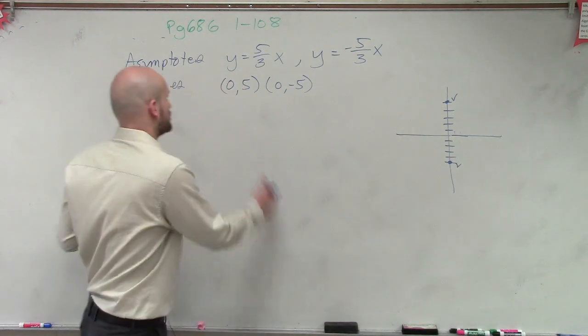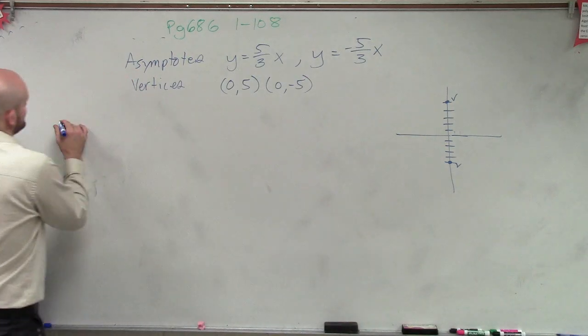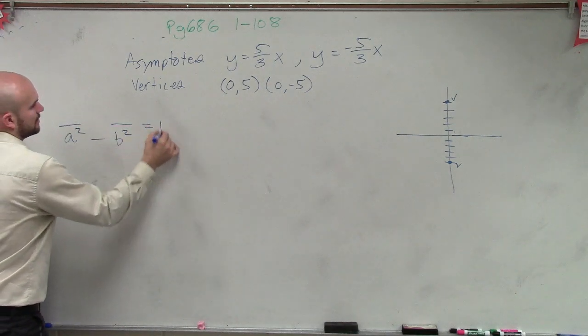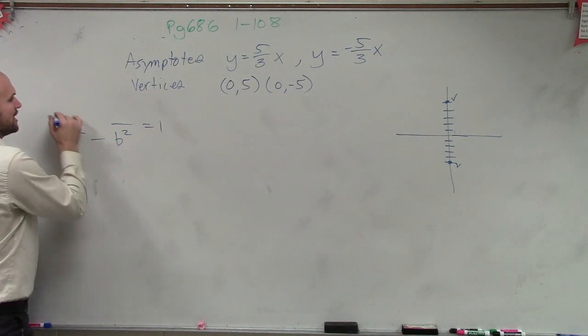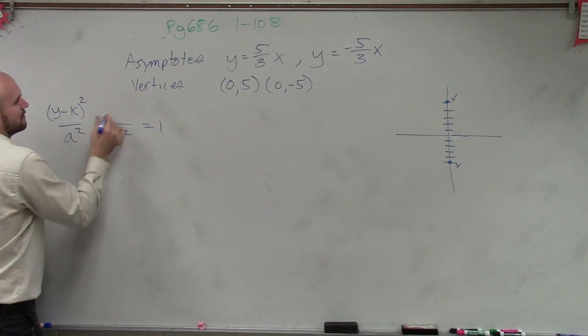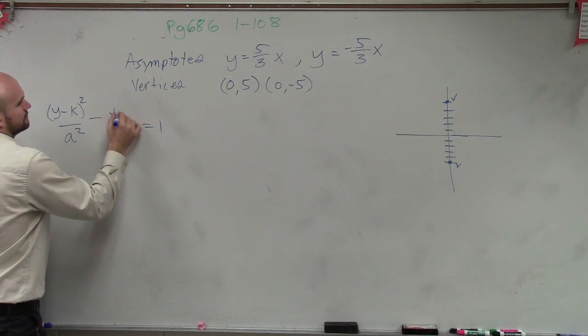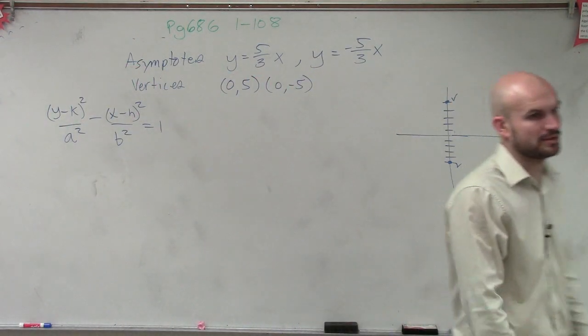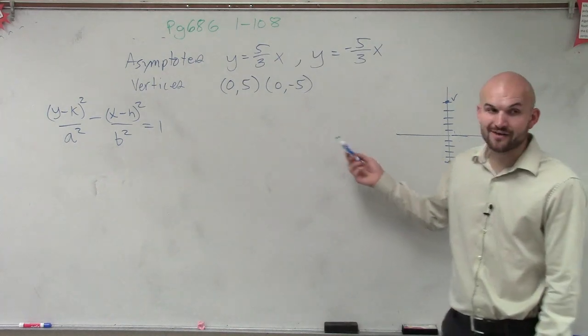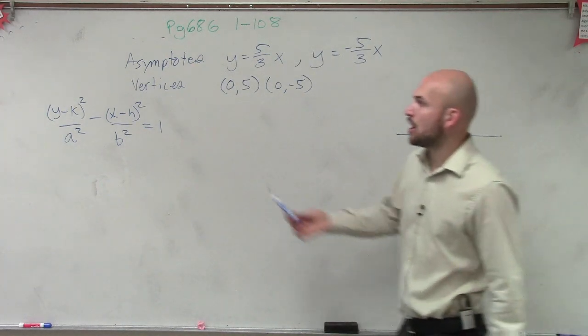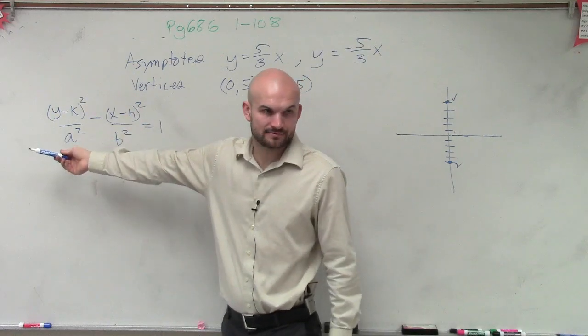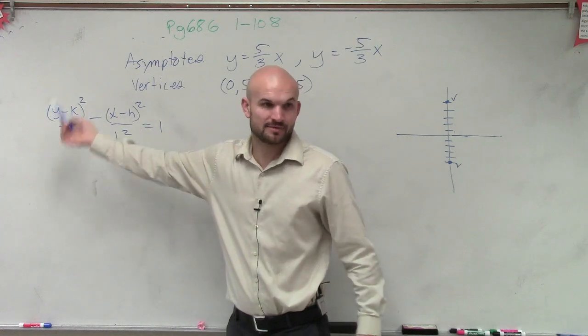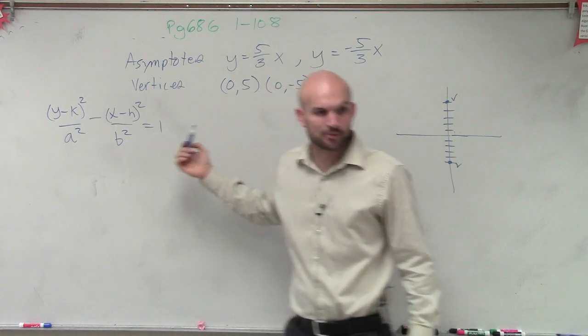So the formula for a vertical transverse axis is going to be, remember, it's always a squared minus b squared as your denominators. But since now it's vertical, I'm going to have y minus k squared. So I'm going to now use the other form of our formula. When we have a vertical transverse axis, our y squared is over our a. If it was a horizontal transverse axis, the x minus h squared would be over the a. But it's always a squared minus b squared, always, for a hyperbola.